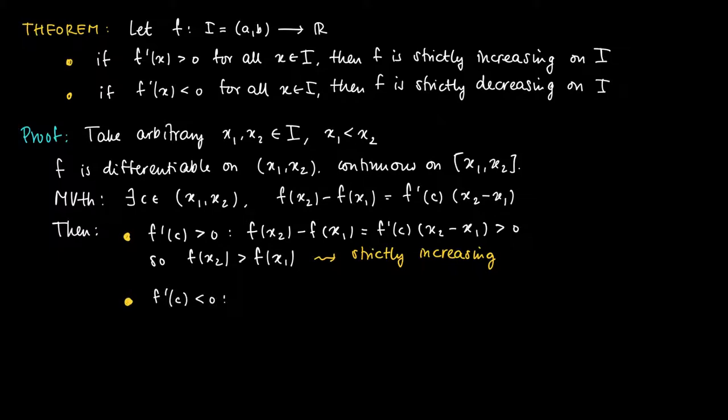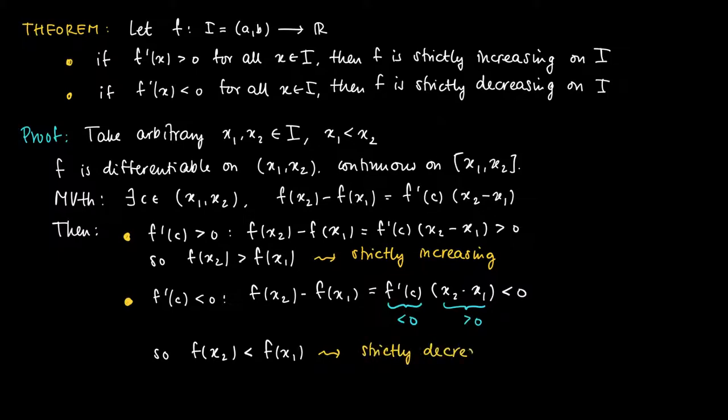Well something similar if the derivative is smaller than 0, then f(x2) minus f(x1) equals a product of a negative number which is f'(c) times x2 minus x1. And the first number is smaller than 0, the second number x2 minus x1 is larger than 0, so the product is smaller than 0. So we see that f(x2) is smaller than f(x1), and this means that the function is strictly decreasing on the interval since we may vary x1 and x2 and we may yield in this way the general statement.